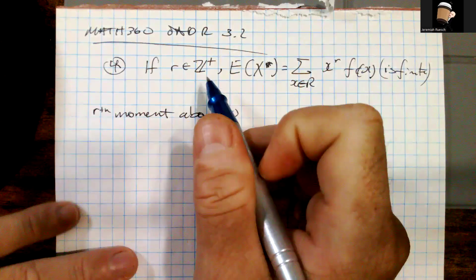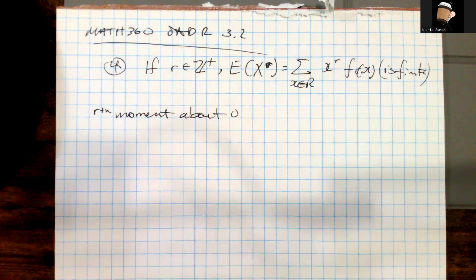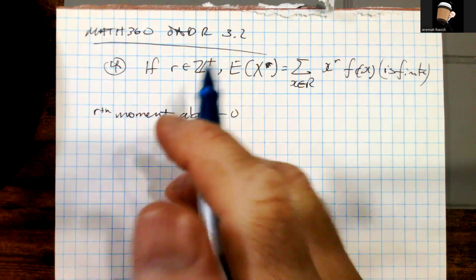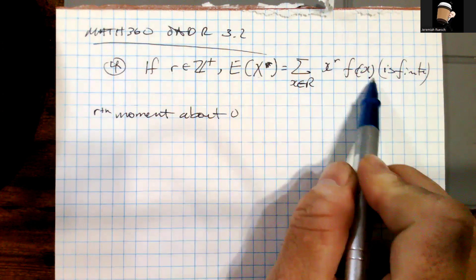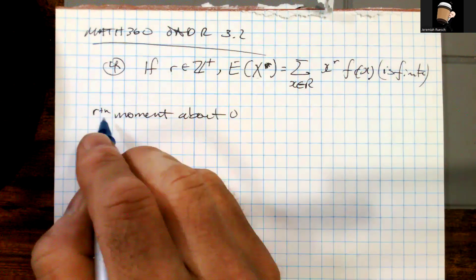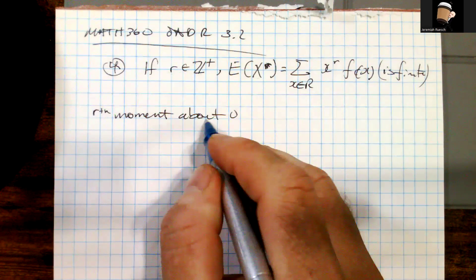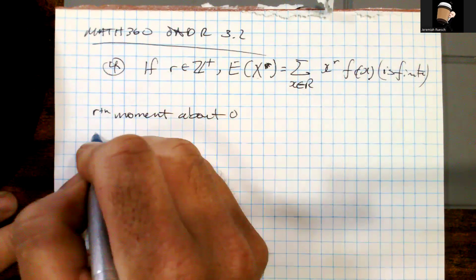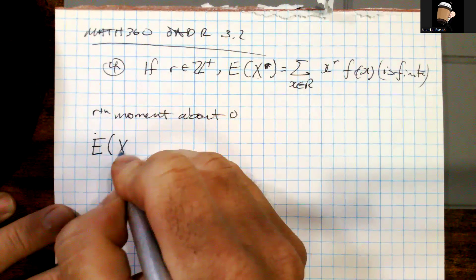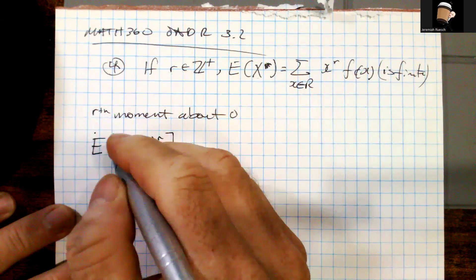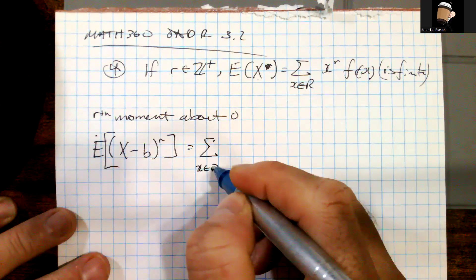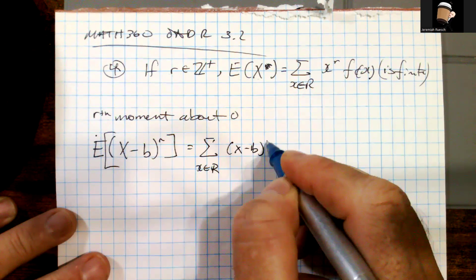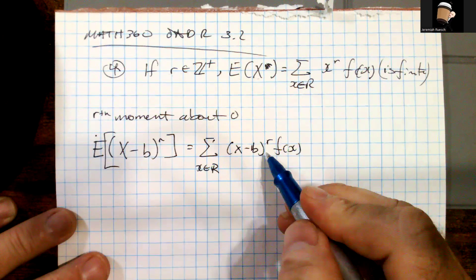This final piece isn't a calculation example but a conceptual one. If r is a positive integer and E[X^r] exists and is finite, we call that the rth moment of the distribution about 0. More generally, E[(X−b)^r] — assuming it exists — is called the rth moment about the point b. This concept shows up a lot in theoretical work and calculations.